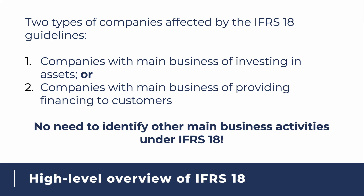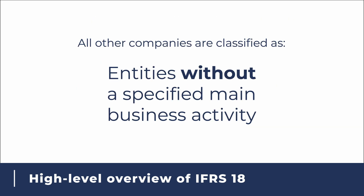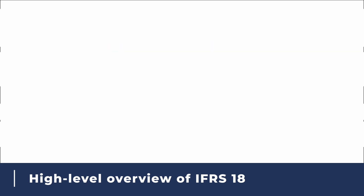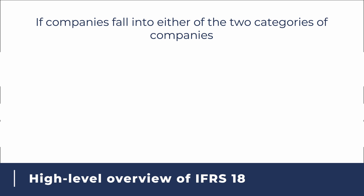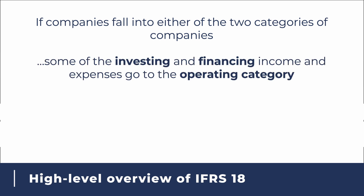All other companies that do not belong to these two types are called entities without a specified main business activity, and they apply the general requirements of IFRS 18. When companies have a specified main business activity of investing in assets or providing financing to customers, they would classify some of their investing and financing income and expenses under the operating category to reflect the nature of the business they are operating in.